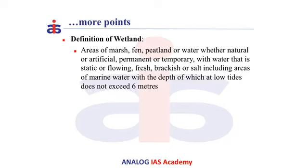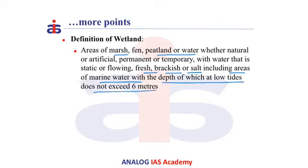Now, let us look into the definition of wetland. A wetland is an area of marsh, fen, peatland or water, whether natural or artificial, permanent or temporary, with water that is static or flowing, fresh water, brackish or saline, including areas of marine water with a depth which at low tide does not exceed 6 meters.